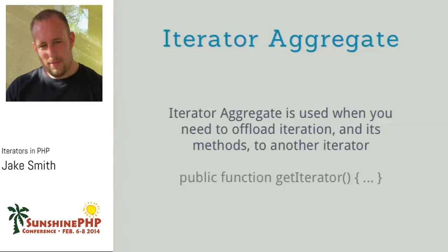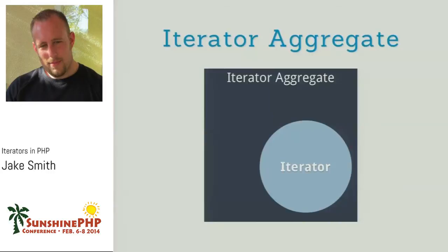An IteratorAggregate: the best way to describe it is it's used when you need to offload iteration to something else. It has a method called get iterator. So let's say I have an iterator I want to run over, but those methods I had to create are making my class larger. What you can do is have the getIterator method return an iterator, and that is what's used to run all the iteration. Your IteratorAggregate is essentially a container for your iterator.